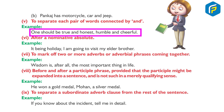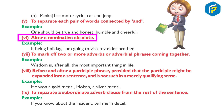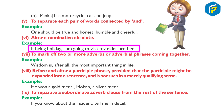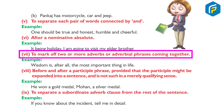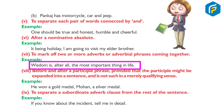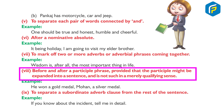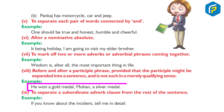Five, to separate each pair of words connected by 'and'. Example: One should be true and honest, humble and cheerful. Six, after a nominative absolute. Example: It being a holiday, I am going to visit my elder brother. Seven, to mark off two or more adverbs or adverbial phrases coming together. Example: Wisdom is, after all, the most important thing in life. Eight, before and after a participle phrase, provided that the participle might be expanded into a sentence.